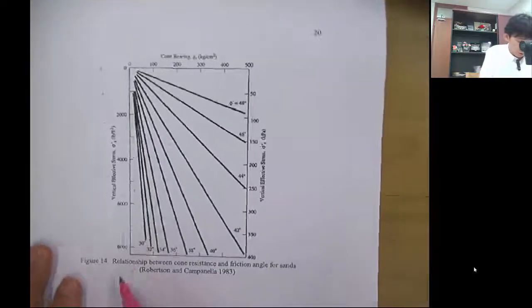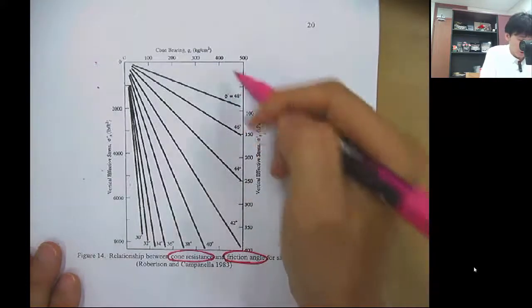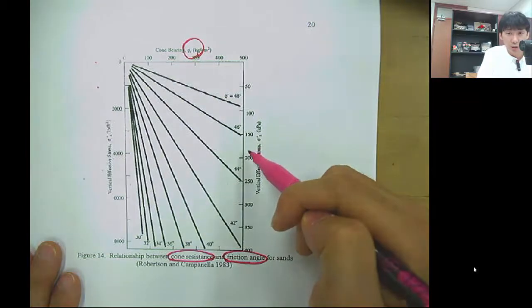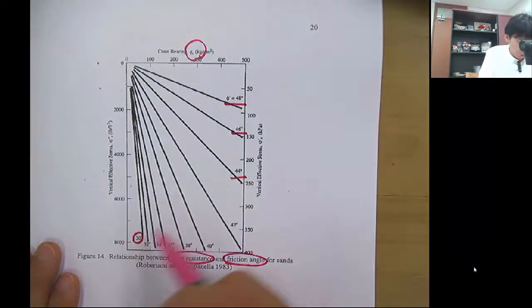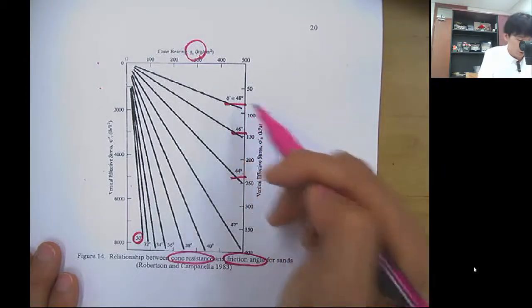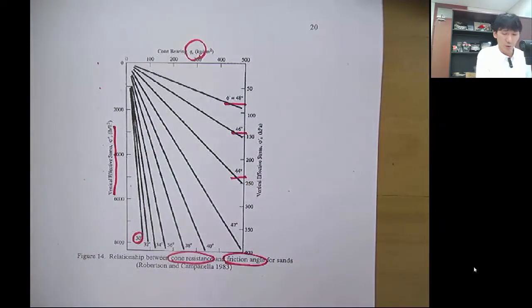The last one is to show you the relationship between the cone resistance QC versus the friction angle of the sand. Here the QC, and you have different friction angles from 30 degrees to 48 degrees, with respect to the depth and the vertical effective stress.